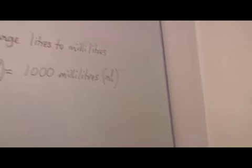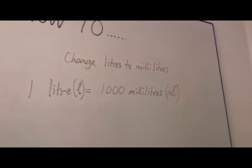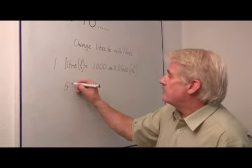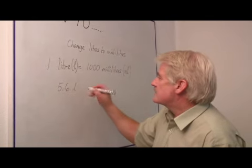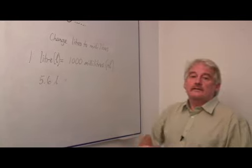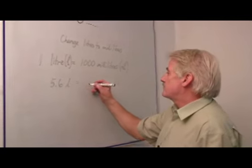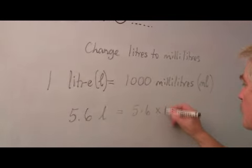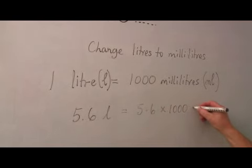This is in fact the easiest process or the easier process because for every litre if we have 5.6 litres we simply have to multiply it by a thousand. So it's going to be 5.6 times one thousand millilitres.